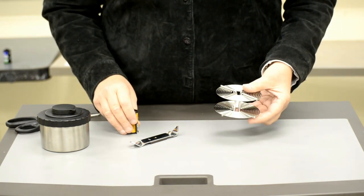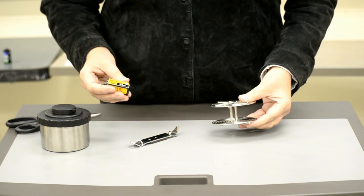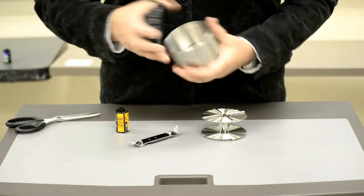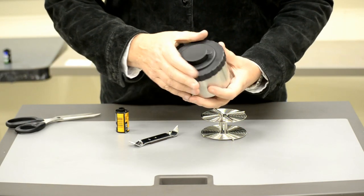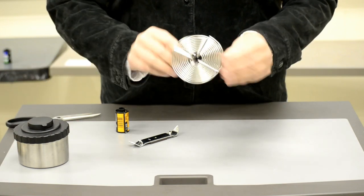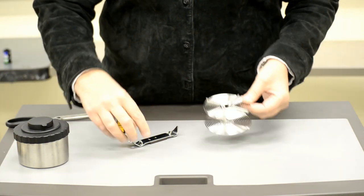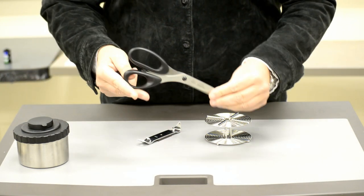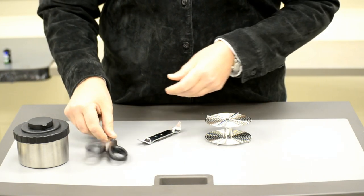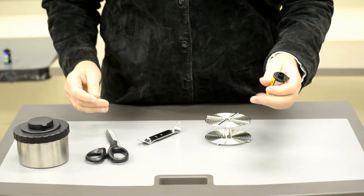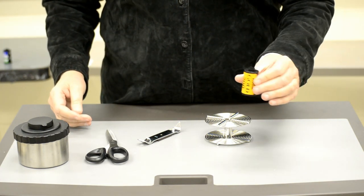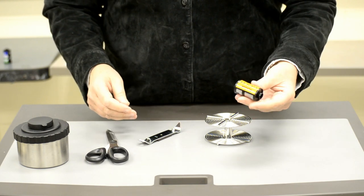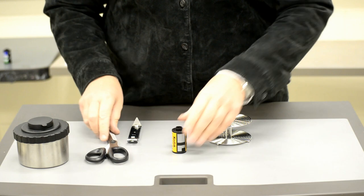The items that you're going to need before you take film out of its cassette and put it onto a reel will be the light tight tank with its lid, the reel itself, a bottle opener, scissors, and your roll of film. Today I'm actually going to be just practicing with a roll of film that is not any good.